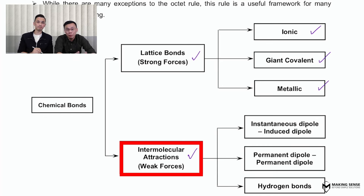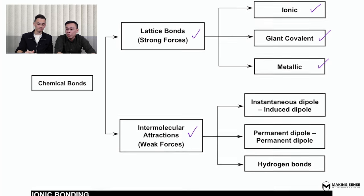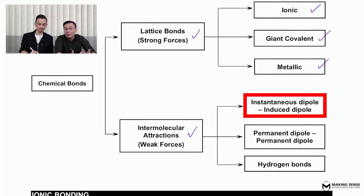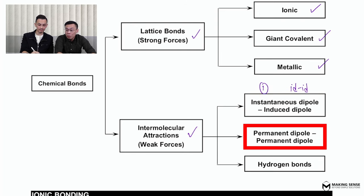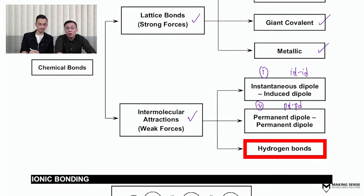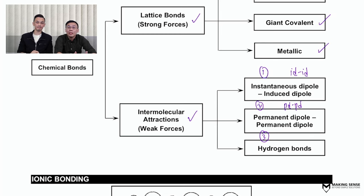On a smaller scale, between molecules there exist intermolecular forces of attraction, which you'll be familiar with from secondary school. But at A Level, we are going to learn three different types: instantaneous dipole–induced dipole interactions (ID-ID interactions), permanent dipole–permanent dipole interactions (PD-PD interactions), and the third type is hydrogen bonds. We will delve into these in greater detail in subsequent lessons.